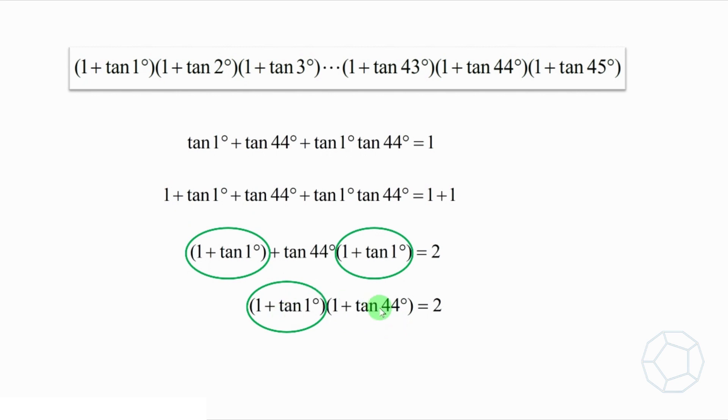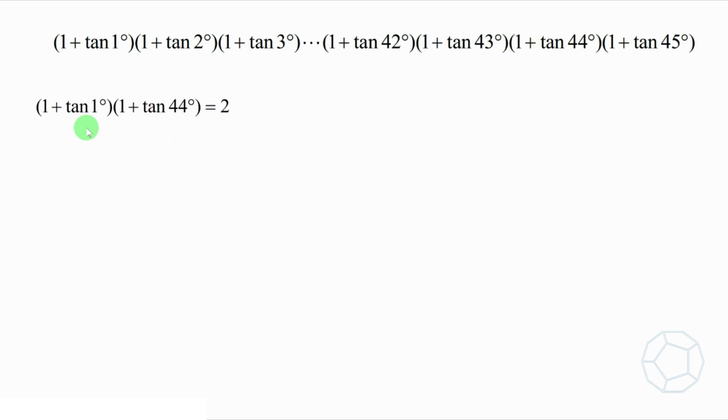Note that this result doesn't apply only to the pair 1 degrees and 44 degrees. We can use the same argument to show that it's true for the other pairs. No matter it's 2 degrees and 43 degrees, or 3 degrees and 42 degrees, as long as the sum of two angles is 45 degrees. So we have the results all the way up to 22 degrees and 23 degrees.